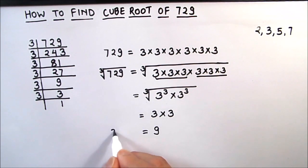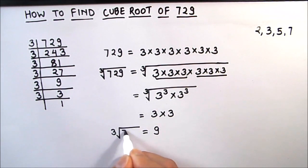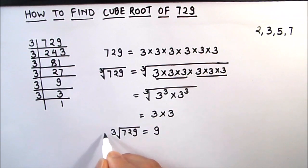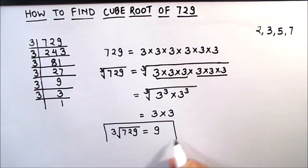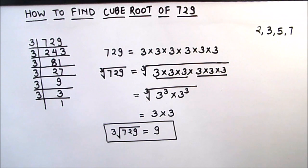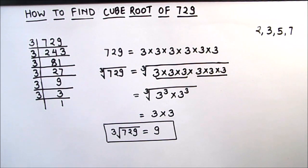So the cube root of 729 is 9. This is how, by using the prime factorization method, you can find the cube root of any number easily.